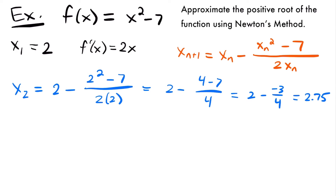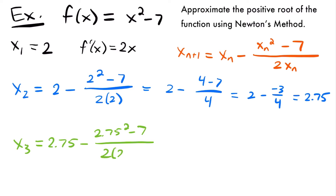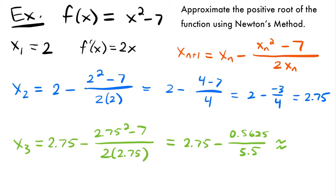Now let's find an even better approximation by finding x sub 3. We plug x sub 2 into the formula: x sub 3 equals 2.75 minus (2.75 squared minus 7) divided by (2 times 2.75). Simplifying, that's 2.75 minus 0.5625 divided by 5.5. When you plug this into your calculator — and you should have a calculator nearby when using Newton's method since you'll be working with decimal values — you find that x sub 3 is approximately 2.6477. This is an even better approximation of the x-intercept.